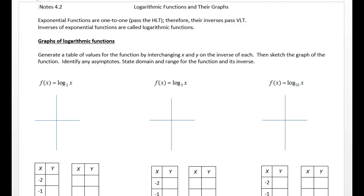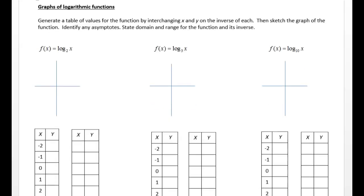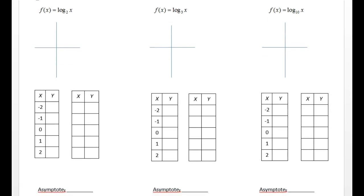It says to generate a table of values for the function by interchanging x and y on the inverse of each, then sketch the graph of the function, identify any asymptotes, and state the domain and range for the function and its inverse. So I'm going to sketch it up. The first table, we're going to do the exponential first — the exponential version, which gives us 2 to the x power.